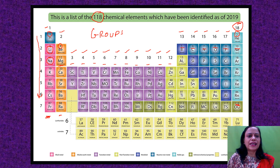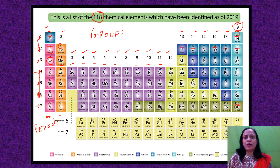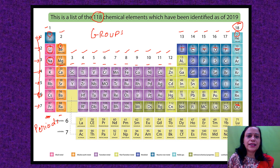Similarly, there are 7 horizontal rows — the first, second, third, fourth, fifth, sixth, and seventh. These are the 7 horizontal rows, and they are known as periods. Groups mean the vertical columns, and periods mean the horizontal rows.